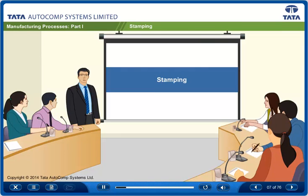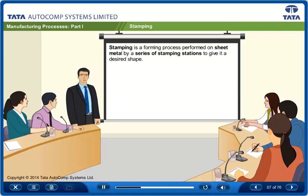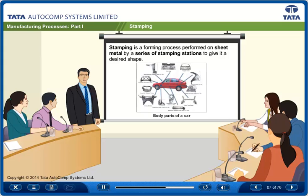Let's take a look at the stamping process first. Stamping is a forming process performed on sheet metal by a series of stamping stations to give it a desired shape. One of the major applications of stamping is in making body parts of a car.